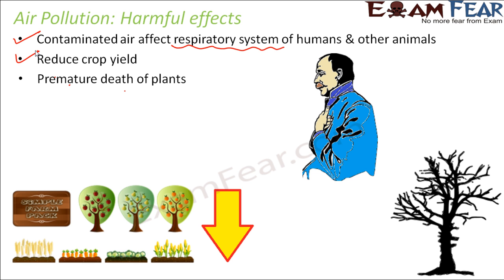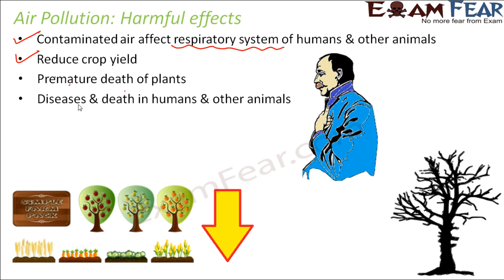Premature death of plants means that even when the plant is young, it ends up dying due to the presence of toxic substances inside it. Air pollution also causes diseases and death in humans and other animals. There are many respiratory disorders that can take place, and these diseases at times can become fatal and cause death.